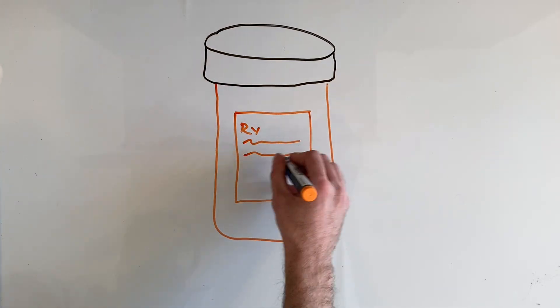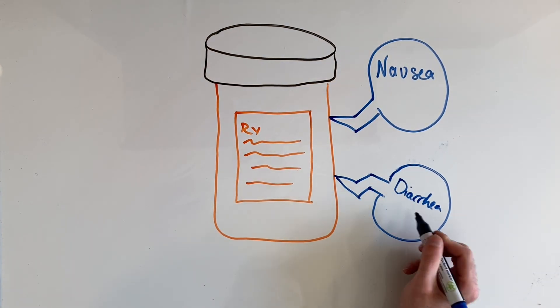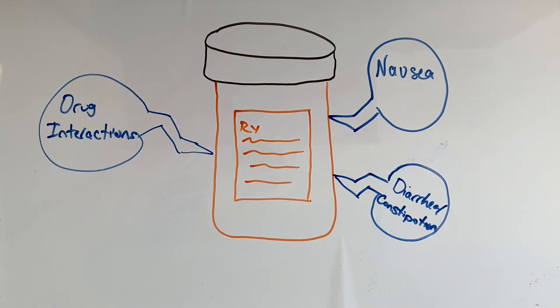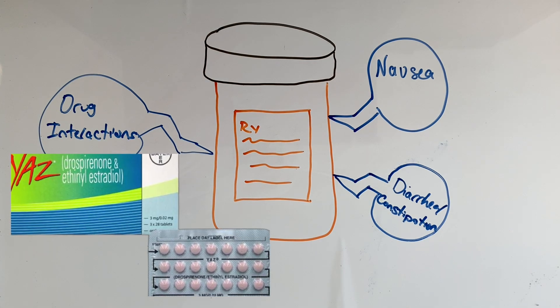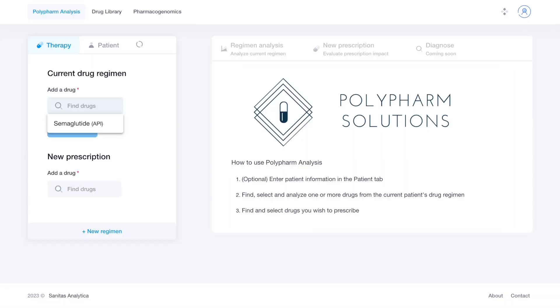Ozempic's main side effects are nausea and diarrhea or constipation, but it can have potentially serious side effects when combined with other medications. Ozempic affects the absorption of oral contraceptives, reducing their effectiveness. Quite an important side effect for many of the women taking Ozempic. Additionally, Ozempic can increase the effects of blood thinners like warfarin, increasing the risk of bleeding.